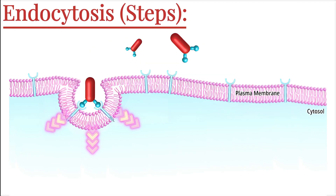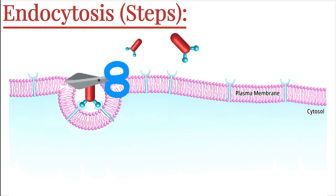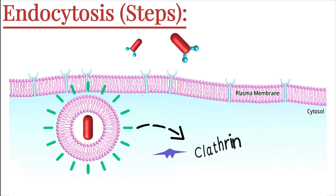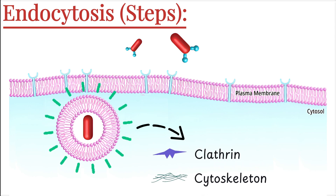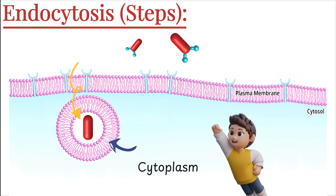Once the plasma membrane has deeply invaginated and surrounded the ligand or particle, the next step is to completely pinch off this part of the membrane from the surface. This results in the formation of a vesicle — a small, enclosed membrane-bound sac inside the cytoplasm. In receptor-mediated endocytosis, proteins like clathrin help shape and close the vesicle, while in phagocytosis, the cytoskeleton helps complete the enclosure. At this point, the material from outside the cell is now fully enclosed within a vesicle inside the cell, protected by a lipid membrane, and officially inside the cytoplasm, ready for the next step.